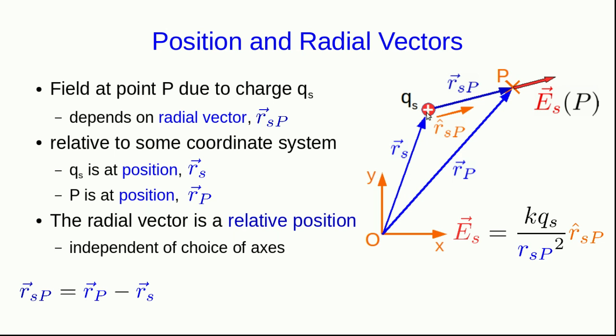But we find it from those positions just through usual vector subtraction. Just verify that if you go negative Rs plus Rp, you come up with Rsp. And the distance Rsp that appears in the equation for the electric field is just the magnitude of that vector. And I'll just remind you, as we saw in the previous unit, that we can get a unit vector like Rsp hat just by taking Rsp and dividing it by its own magnitude.